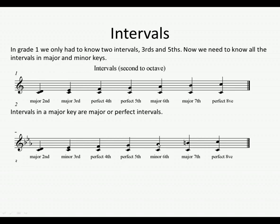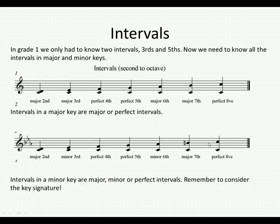C to A flat — because there is a flat in the key signature — would be a minor sixth. In the major key, it's C to A natural, so that would be a major sixth. C to B natural — major seventh, because that's the same as in the major key. And then again, the perfect octave. So in a minor key, we have major, minor, and perfect intervals, whereas in the major key, we only have major and perfect intervals.